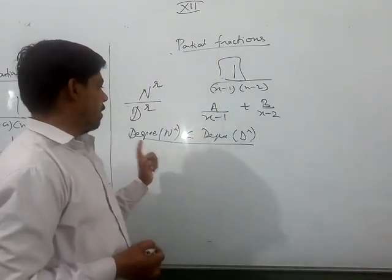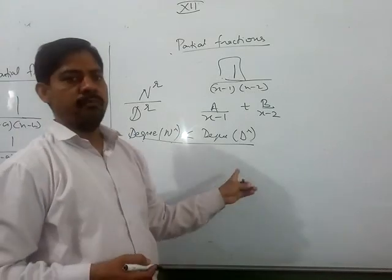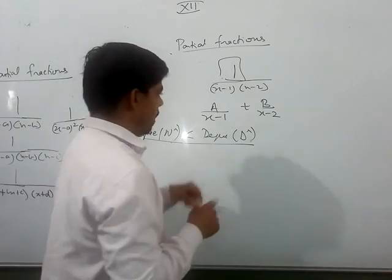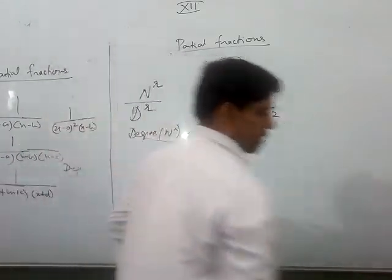So this is the first rule. Degree of numerator should be less than degree of denominator. Then we will start the partial fraction. Partial fraction is A upon x-1 plus B upon x-2.